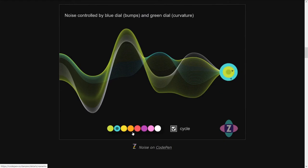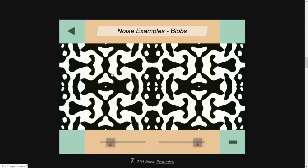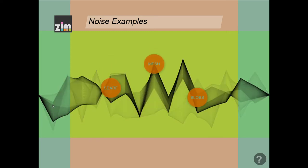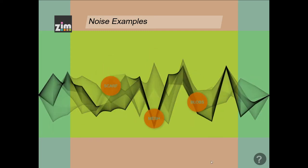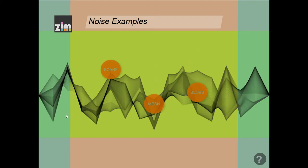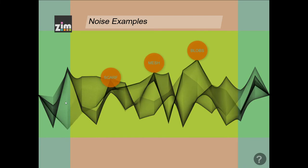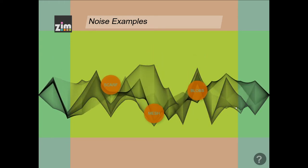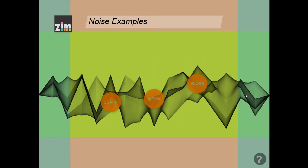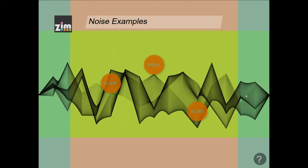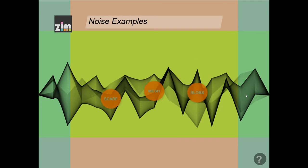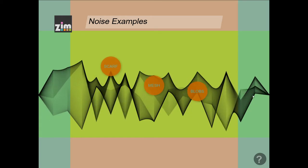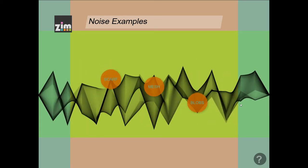You can play with it with the dials and the colors. We're going to go into the noise example. Basically what's happening is noise is an equation, and we can give that equation values, and if we change the values we can change what the output will look like. One of the values will change where in the equation we are, so as we change that value the equation will move like this. Really what we're doing is just moving along the equation.